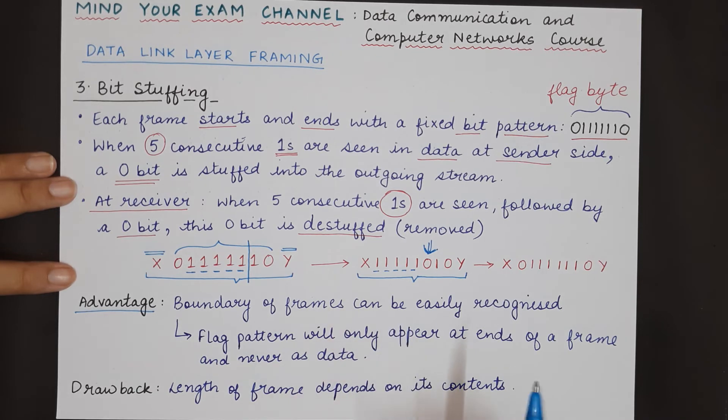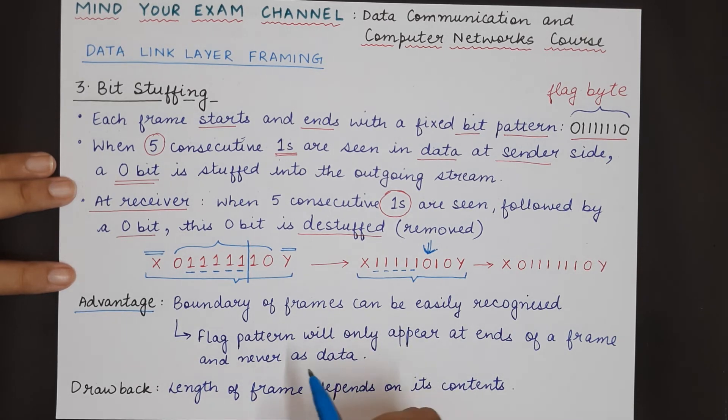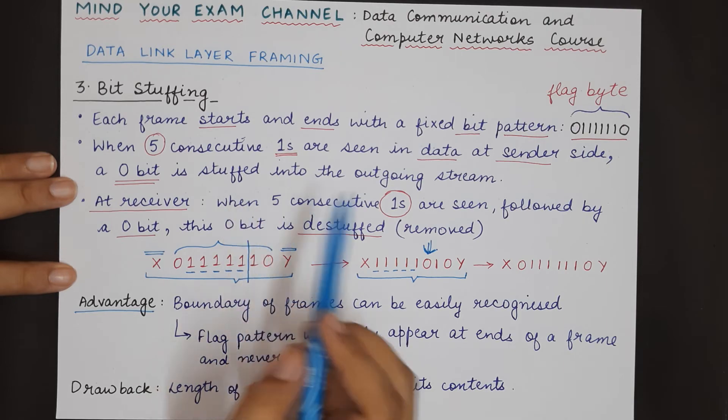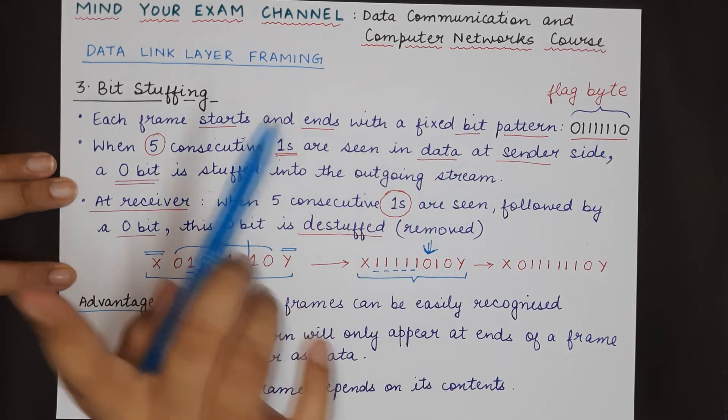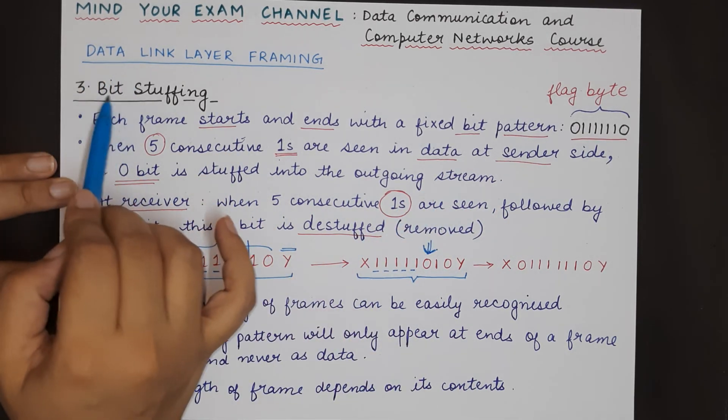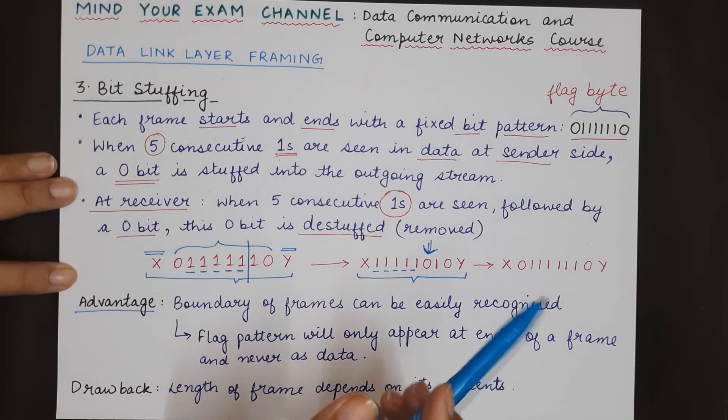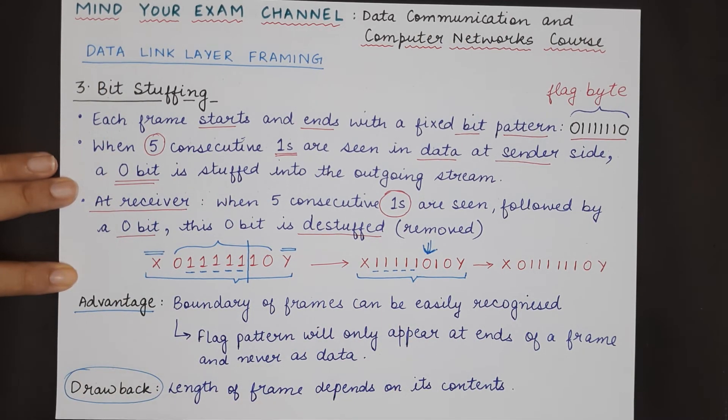Why will flag patterns never appear in data? Because they will always be stuffed with an extra bit, and that is why it is known as bit stuffing in this case.